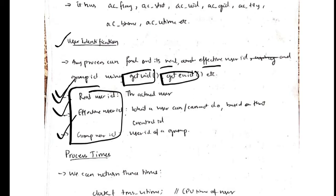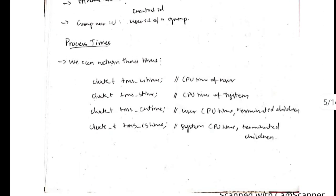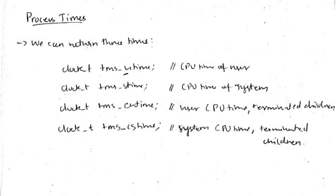Process time is how much time the process of the CPU is used for the user time and for the system time. If it is for a terminated process, we can use these types of functions.